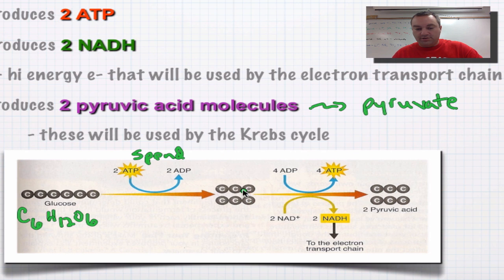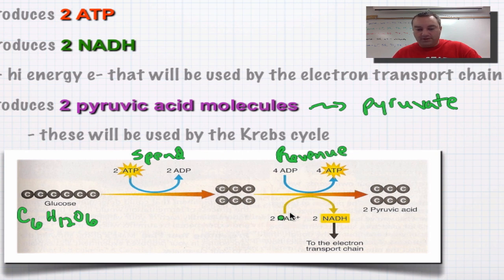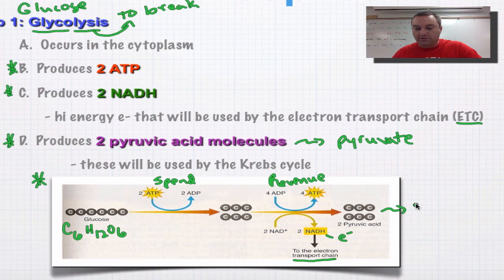In the next step, we're going to take these compounds and rearrange them — move the carbons around and put them in different places, kind of like a shell game. When we do that, we're going to get four ATP. So this will be our revenue, using business terms. One of the other things we get out of this step is NADH. Remember, these are high-energy electrons and they're going to go to the electron transport chain where they're going to produce even more ATP. And then this pyruvic acid, also known as pyruvate, is going to go to the Krebs cycle.